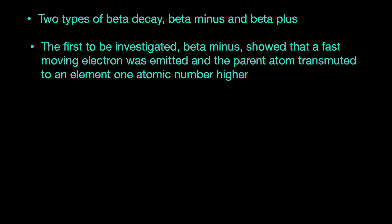The investigation into beta minus showed that a fast-moving electron was emitted from the nucleus and the parent atom changed into an element one atomic number higher. An example of this is the decay of carbon-14, the isotope used in carbon dating.